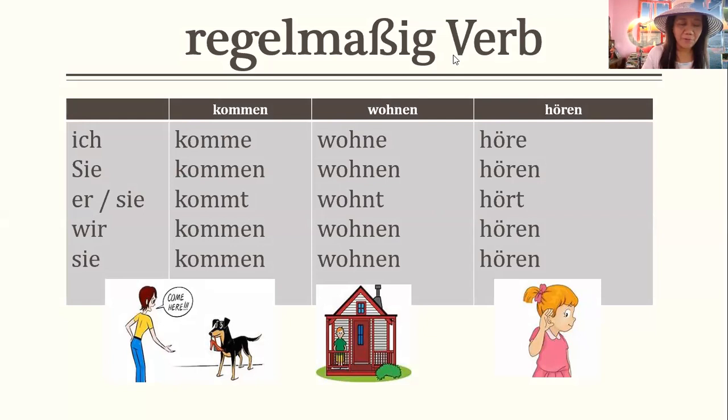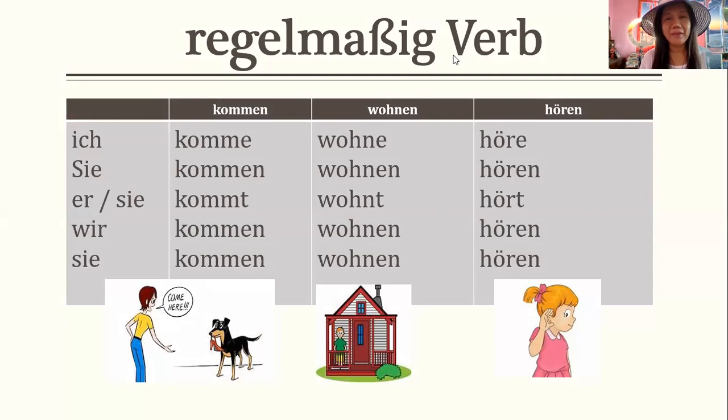We will be using only these pronouns: ich (I), and for 'you' I'll be using the polite Sie. Und er is he, sie is she, wir is we, and sie is they. So we shall look at the Verben.